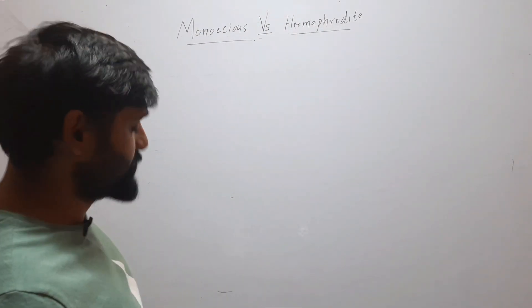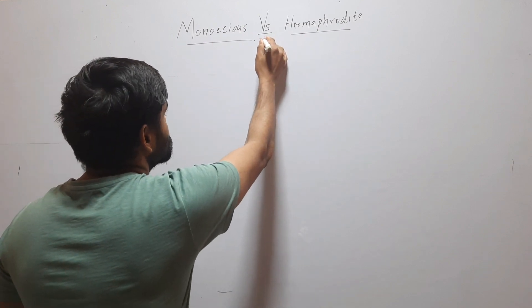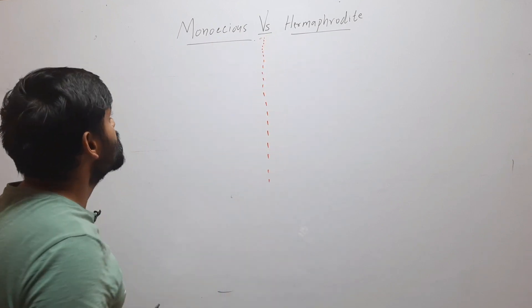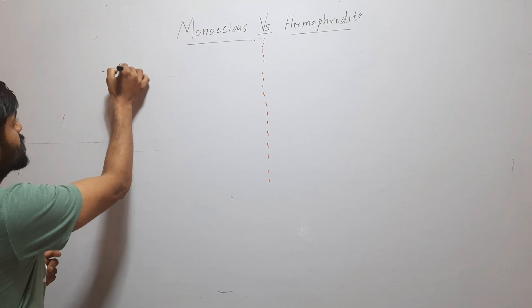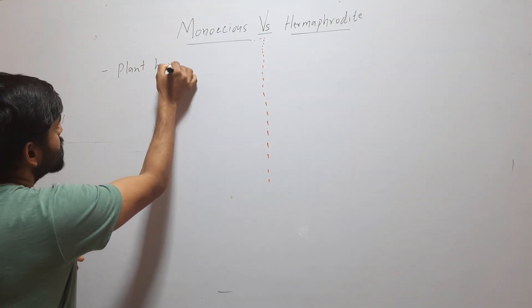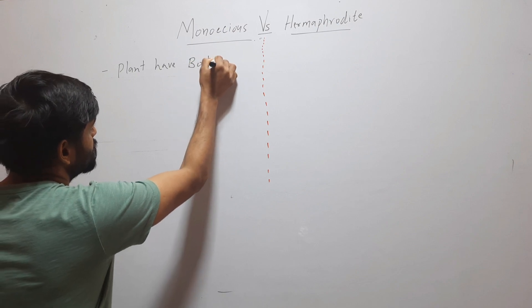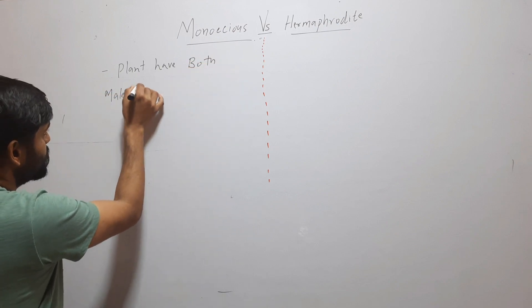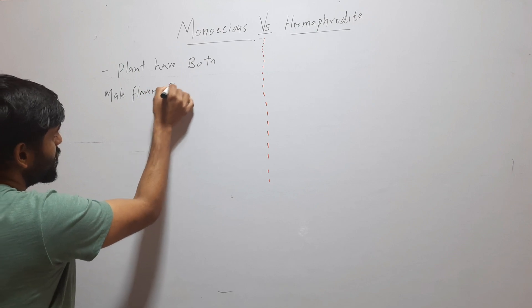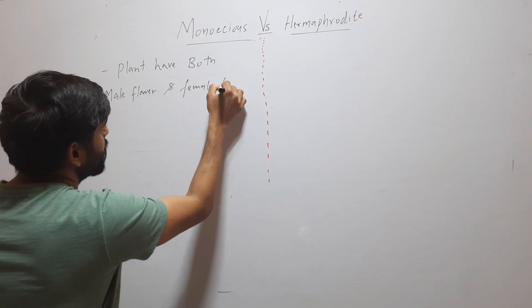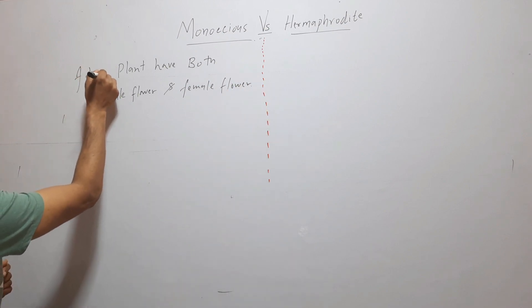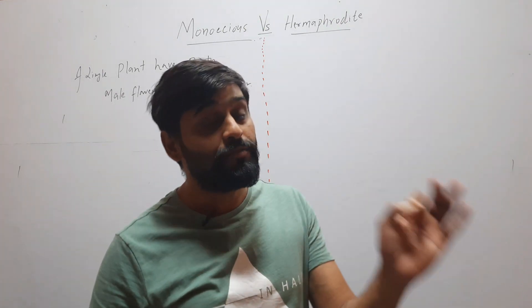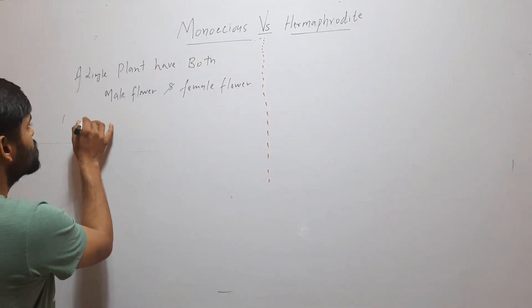Hello friends, welcome to my YouTube channel. In this video we will discuss the difference between monoecious and hermaphrodite. Monoecious is a condition in which a plant has both male flowers and female flowers. When a single plant has both male and female flowers, this condition is called monoecious.